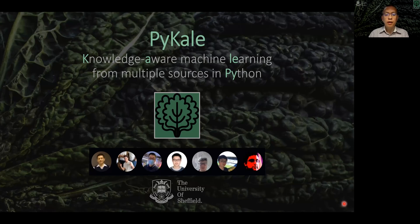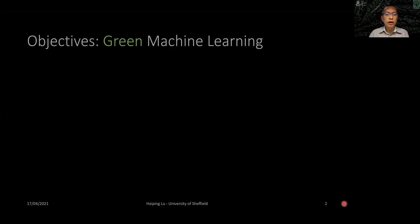Hello. This video introduces PyQ, a Python library for knowledge-aware machine learning from multiple sources. It is developed by a group of researchers at the University of Sheffield. This library has three objectives for green machine learning.